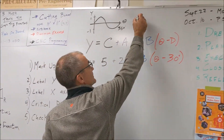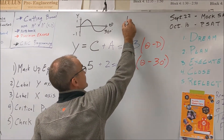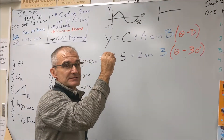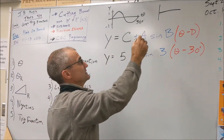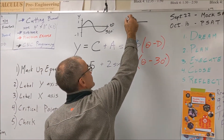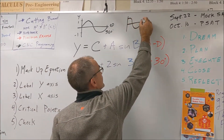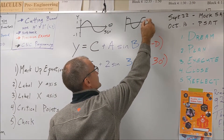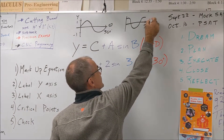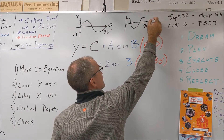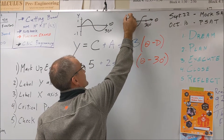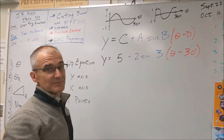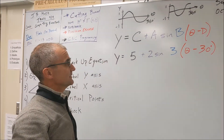Y equals cosine of theta is similar, but it starts up and ends up. It also cycles in 360 degrees. Theta goes across; high point is one, low point is negative one, and it points at zero.